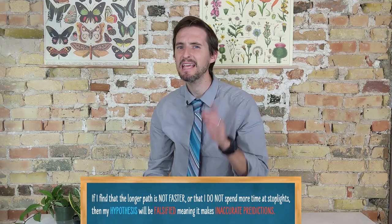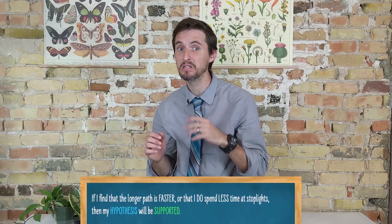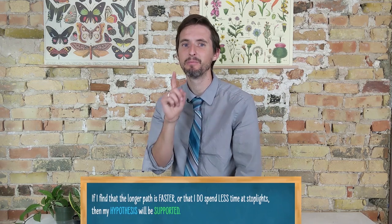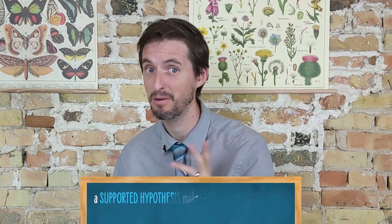However, if the longer path is faster, and I do spend, on average, less time at stoplights, then my hypothesis will be supported. That doesn't mean it is correct. There may be a lot more to it, but so far, my hypothesized explanation makes accurate predictions. My model is useful.